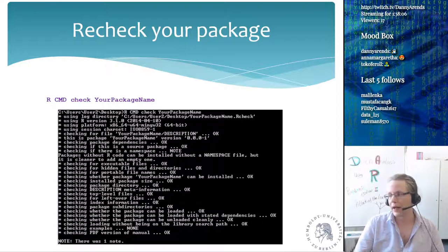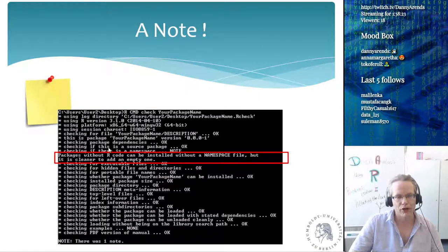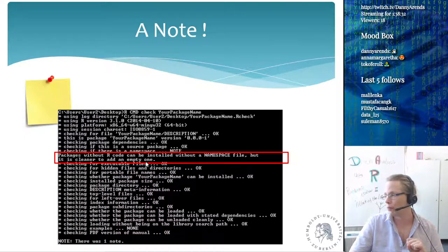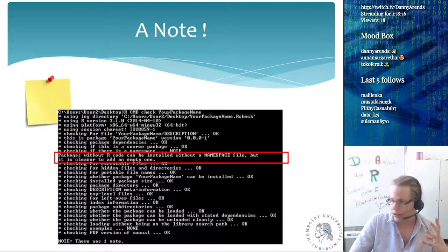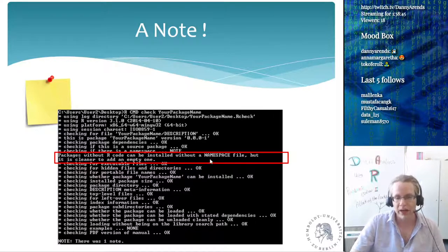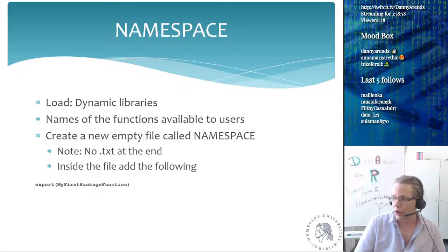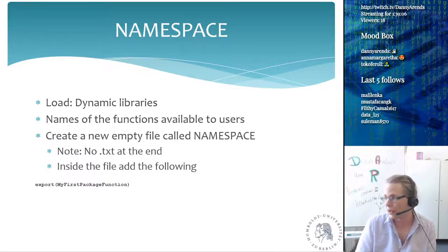After creating the DESCRIPTION file, run 'R CMD check your_package_name' again. This time it finds the DESCRIPTION file and runs more checks. It ends with one NOTE saying 'packages without R code can be installed without a namespace file but it is cleaner to add an empty one.' We want a perfect package with no notes, warnings, or errors, so we need to create a NAMESPACE file.